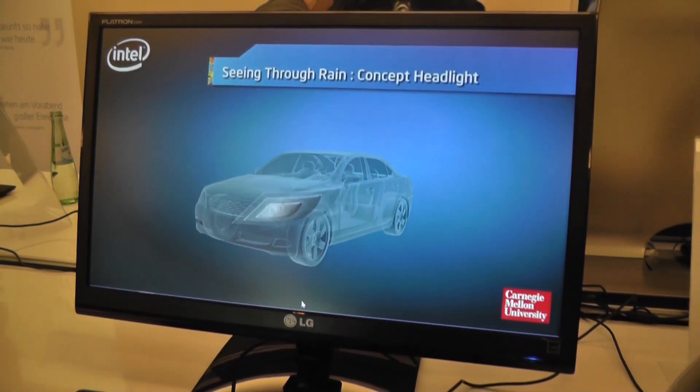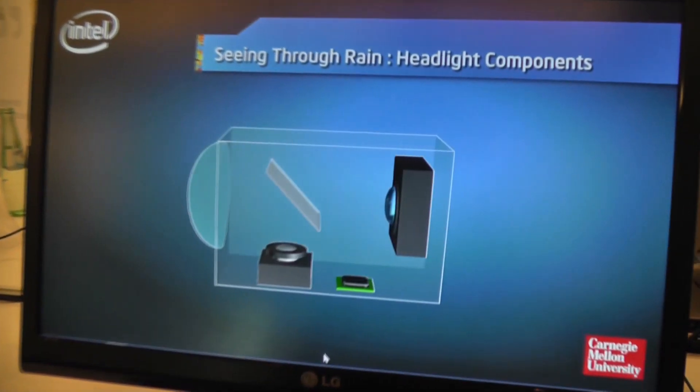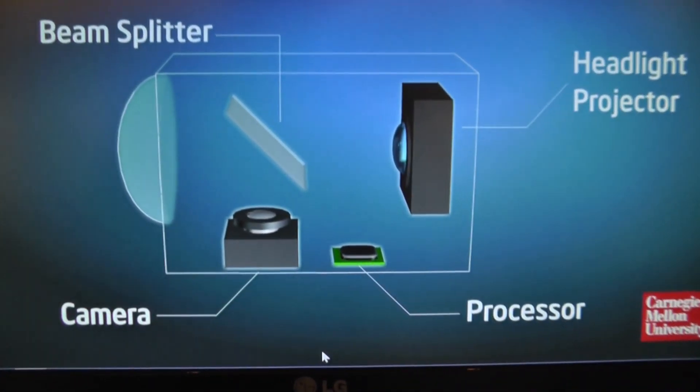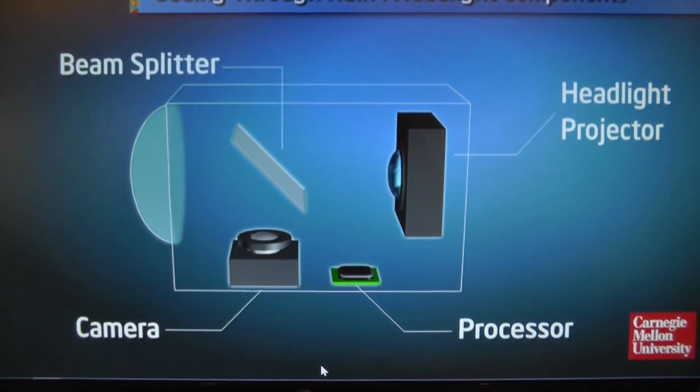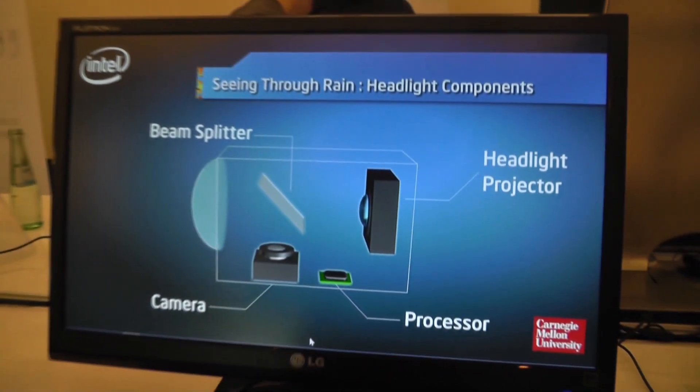In this demonstration, we're trying to develop a headlight that has the ability of turning off light in specific locations where the raindrops are falling through the headlight beam.